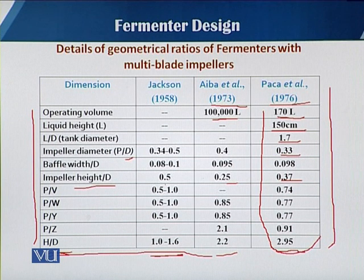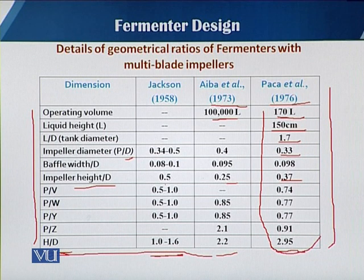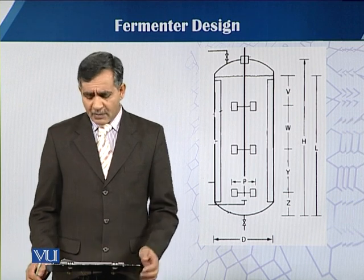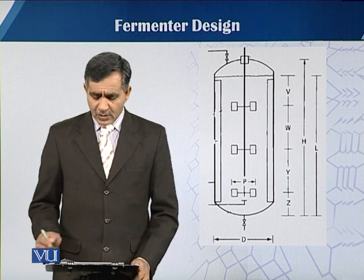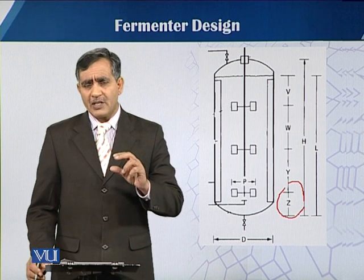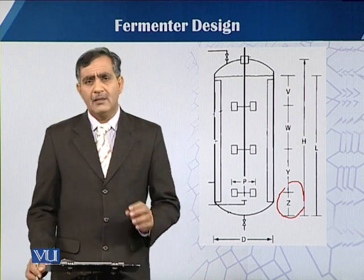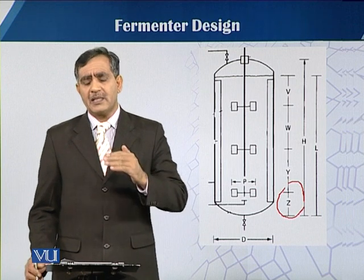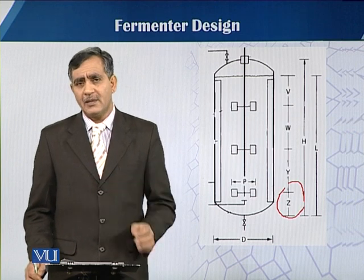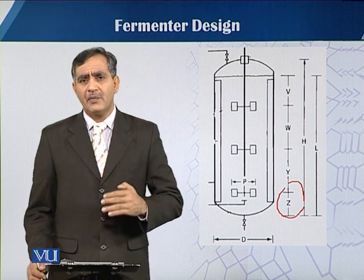Once we calculate the total height and diameter, we calculate the volume using the geometrical ratios and formulas from the previous module. As shown in the diagram, Z is the height of the first impeller from the bottom; Y is the distance from the first to the second impeller; W is from the second to the third; and V is the depth of the last impeller from the surface of the working volume.